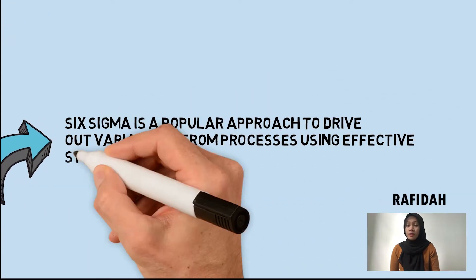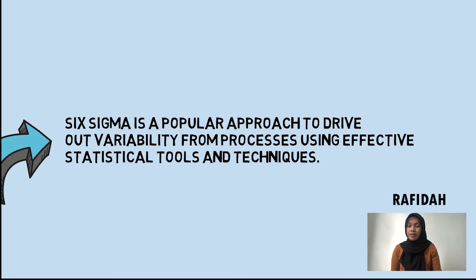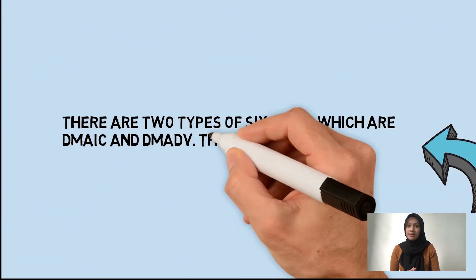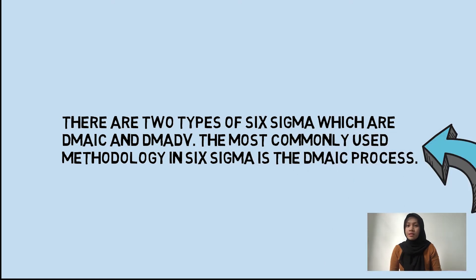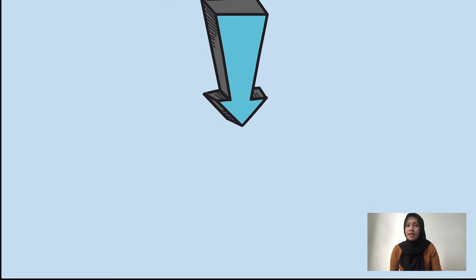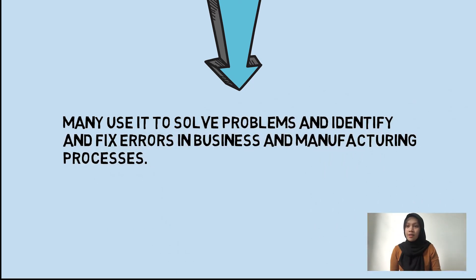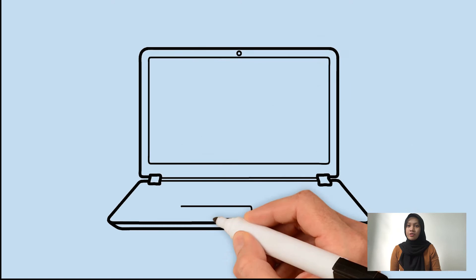Six Sigma is a popular approach to drive out variability from processes using effective statistical tools and techniques. There are two types of Six Sigma: DMAIC and DMADB. Many use it to solve problems, identify and fix errors in business and manufacturing processes.